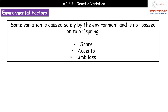The next category is environmental variation. If variation is caused purely by the environment, it will not be passed on to offspring. Things like your accent, scars, tattoos, or tragically losing a limb — that's just you. You're not going to pass that on to your offspring. So environmental-only variation results in changes to the organism that are not heritable.